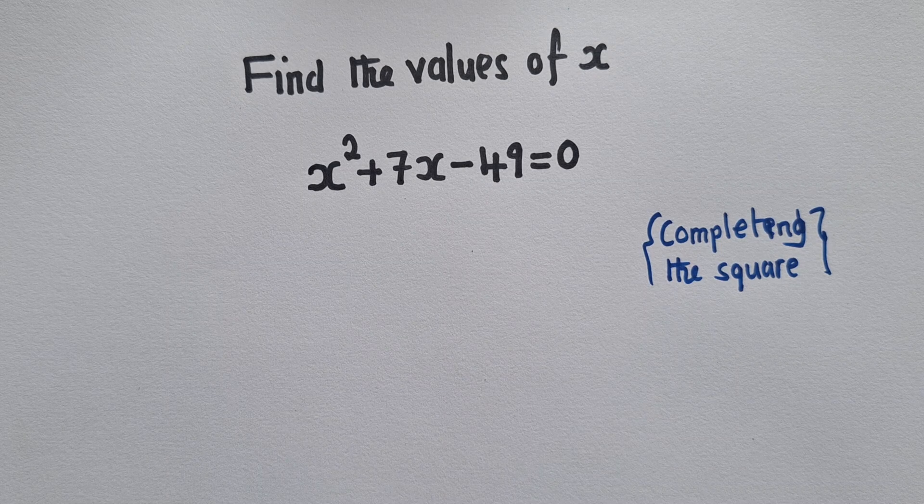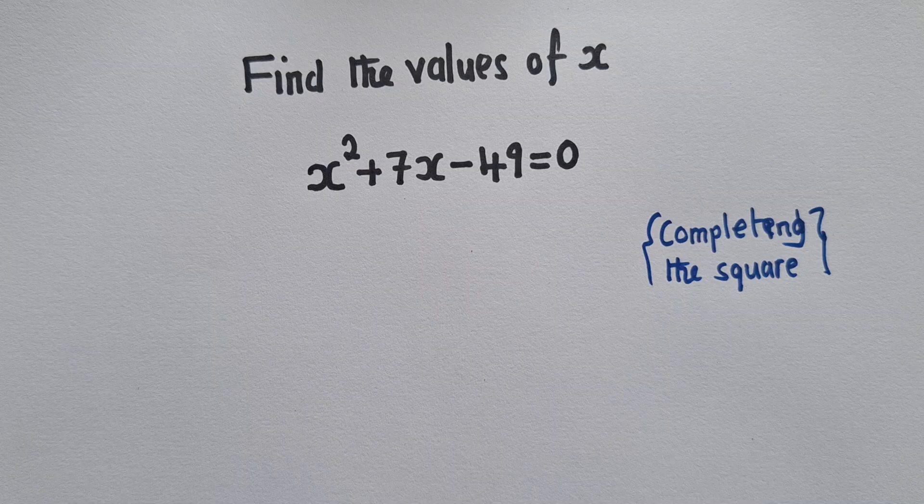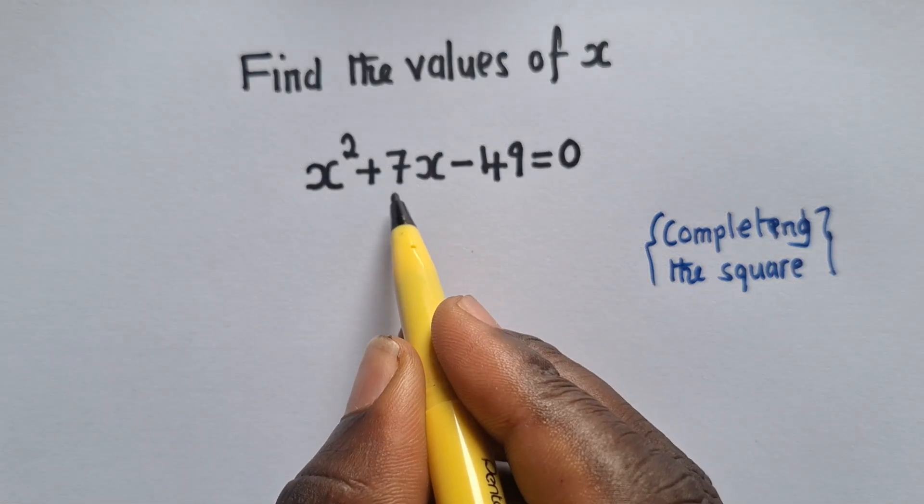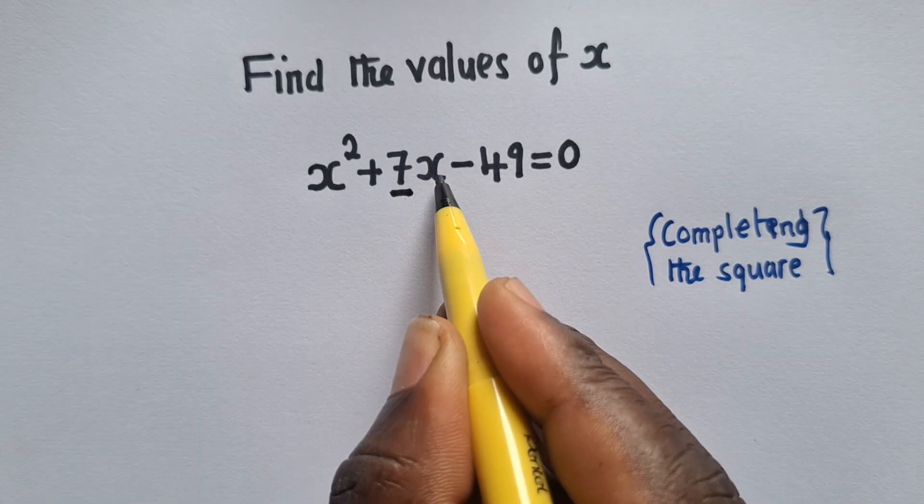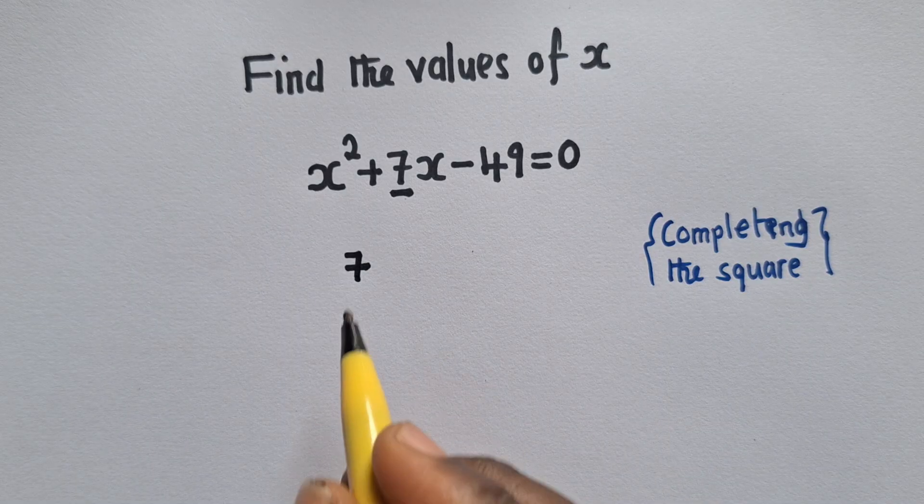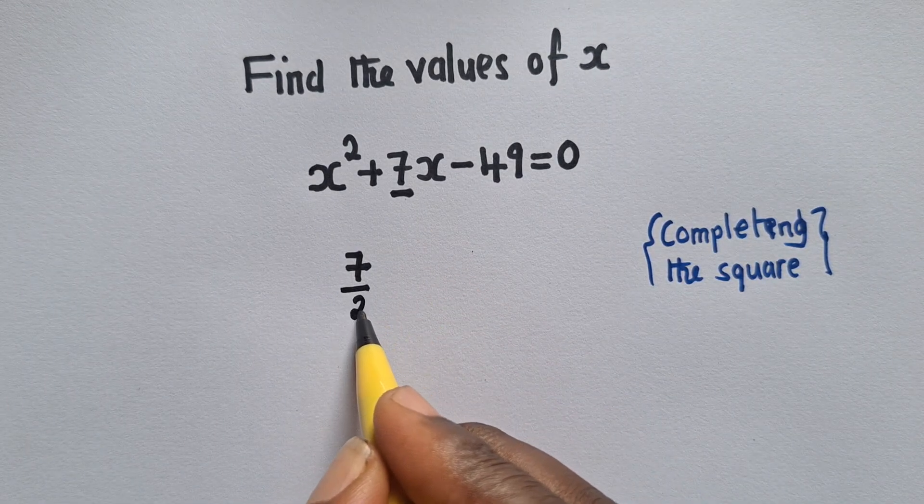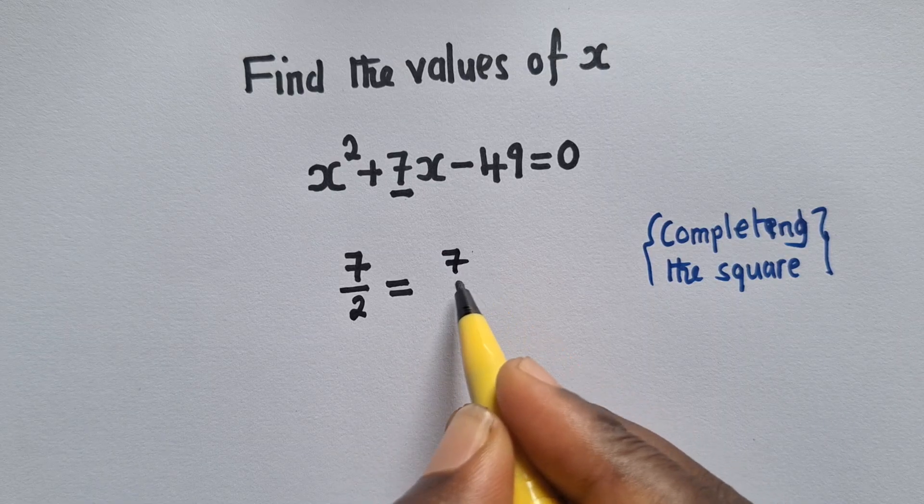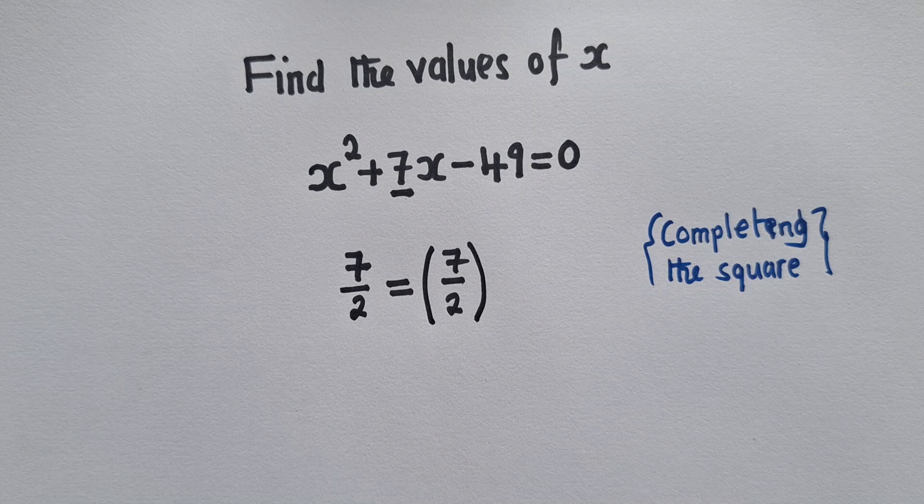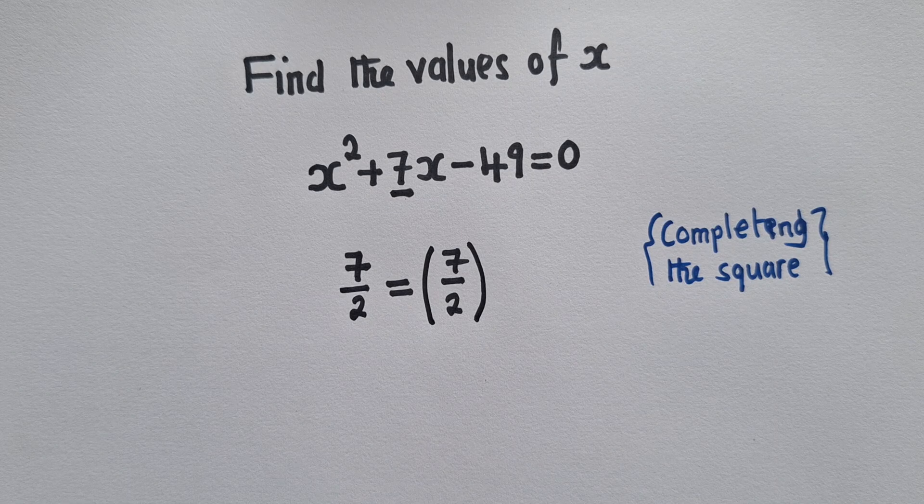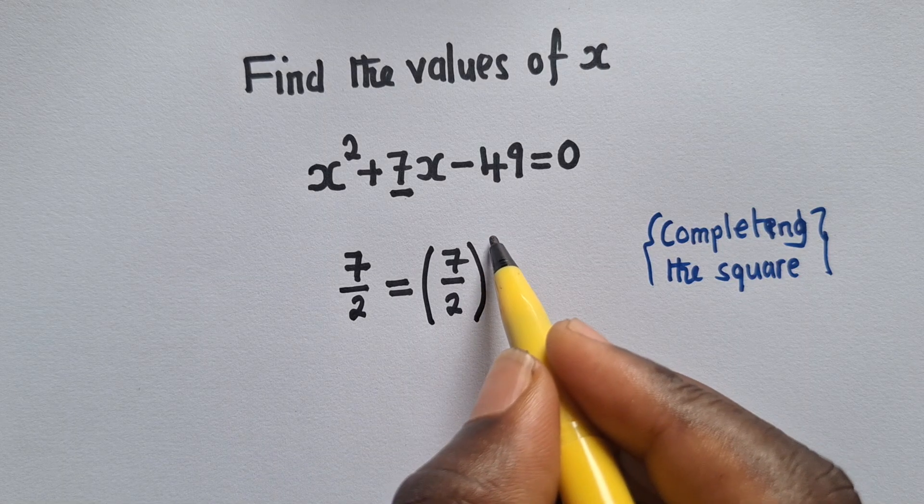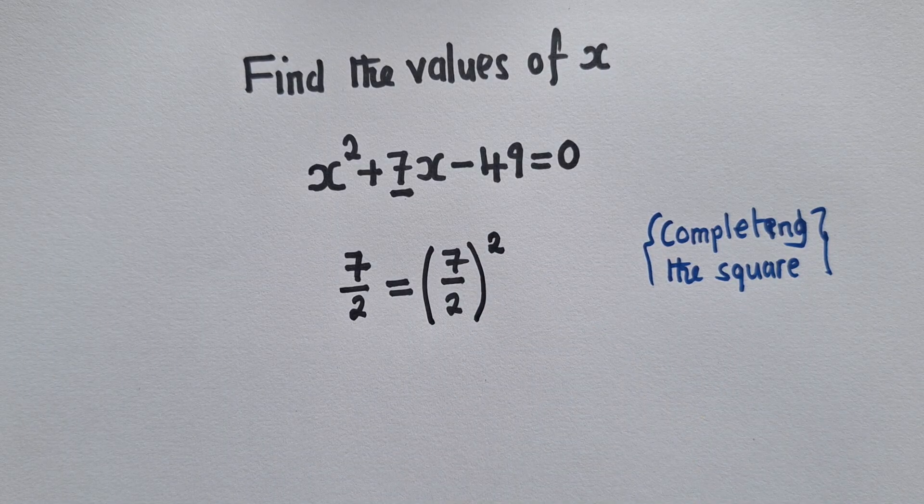Now, when it comes to completing the square, there are just a few concepts that you need. The first step here must be to get your B term. So the term which has got x here, that's 7. When you get it, always divide by 2. And after dividing by 2, you square it.